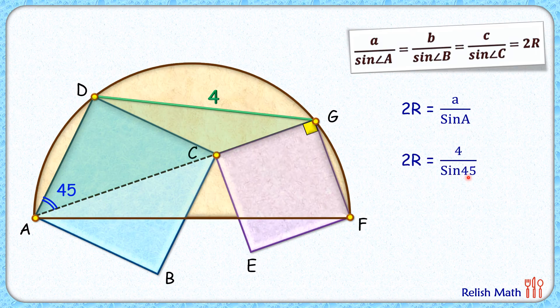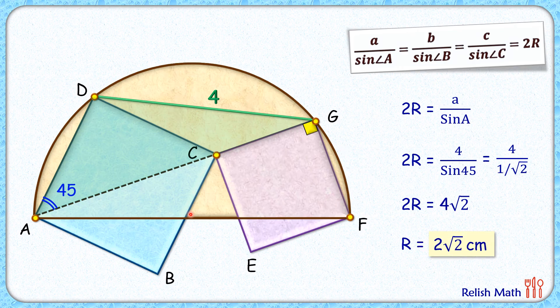Sin 45 is 1/√2, so 2R = 4√2, and R, the circumradius or the radius of this brown semicircle, is 2√2 centimeters. That's our answer! I hope you enjoyed the solution.